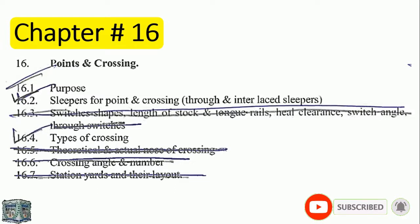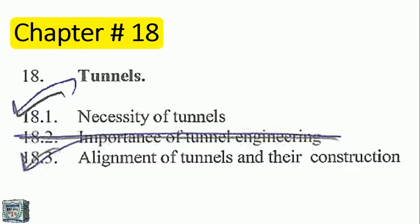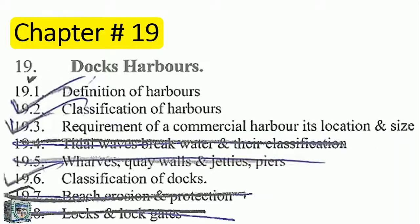Chapter 17: Signals — classification of signalling objects. Chapter 18: Tunnels — importance of tunnel engineering. Chapter 19: Docks and Harbours — breakwaters, classification, quay wall, jetties, and piers.